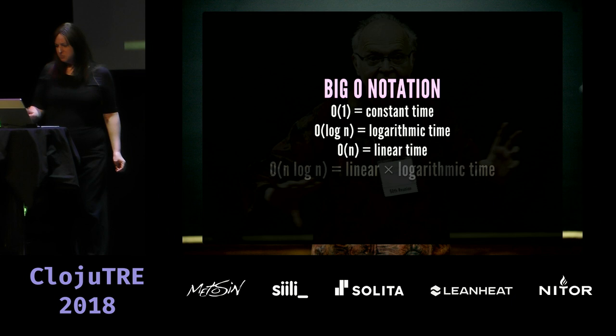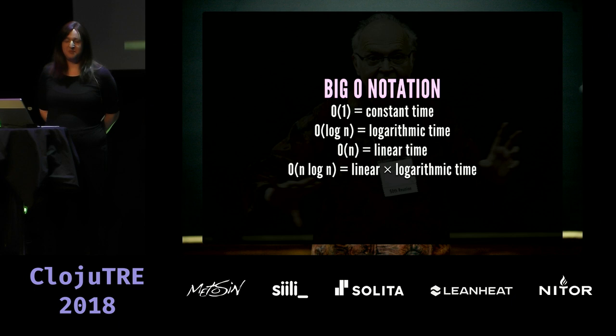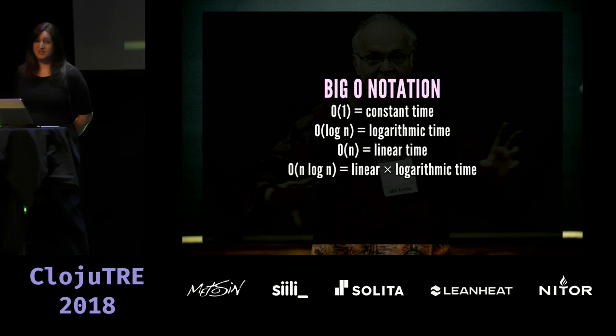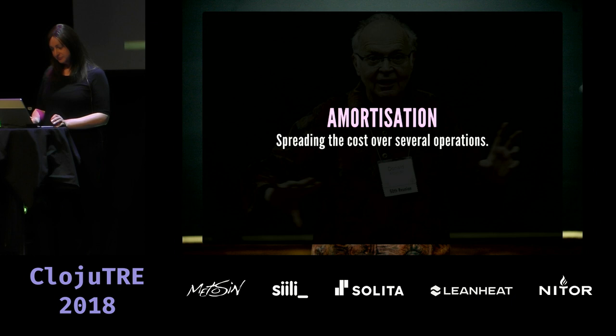There's also O(n log n) — linear times logarithmic time — which you usually see with sorting algorithms like quicksort. The worst case runtime of quicksort should be O(n log n), and if your sorting algorithm is worse than that, it's not very good.